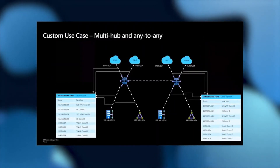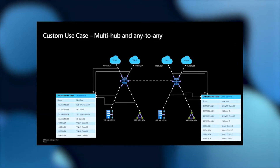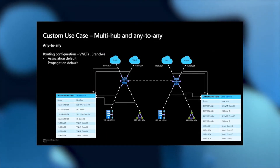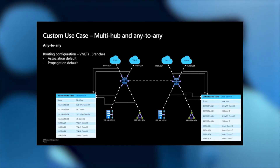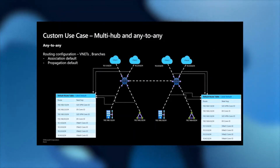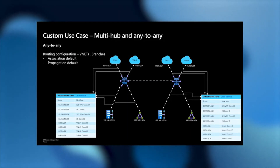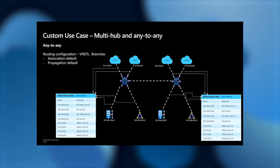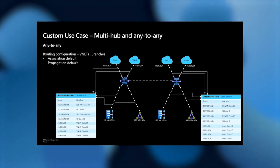The next use case takes a closer look at the routing configuration. With any-to-any, the default route table gets all routes from all connections — VNet connections and branch connections. What's actually happening is the routing configuration of VNet and branch connections gets the association and propagation set to the right route tables, which enables these flows.